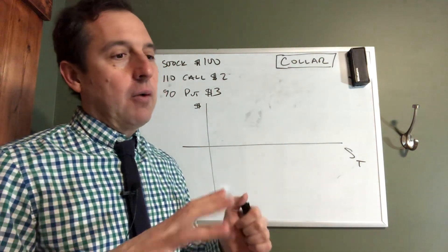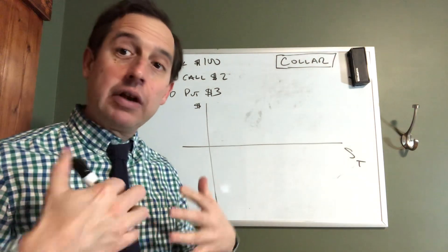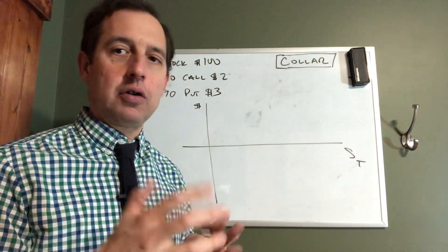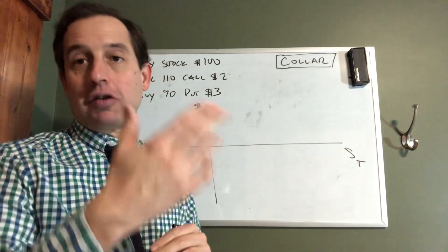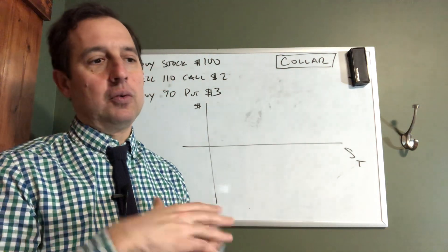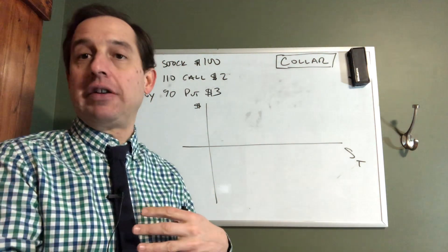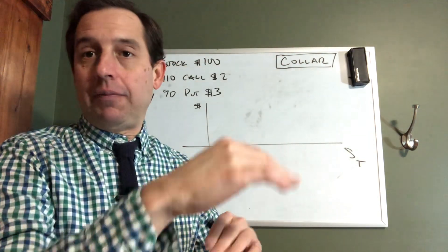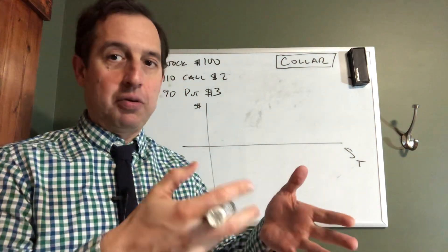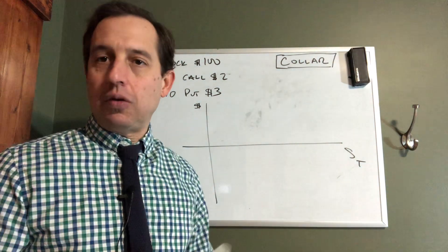Here we're going to look at the collar option spread on stock options. A collar is a general term in finance, so you may hear it quite often. It always generally means the same thing: you're going to limit your downside and also your upside, leaving yourself exposed to the asset only within a particular interval.